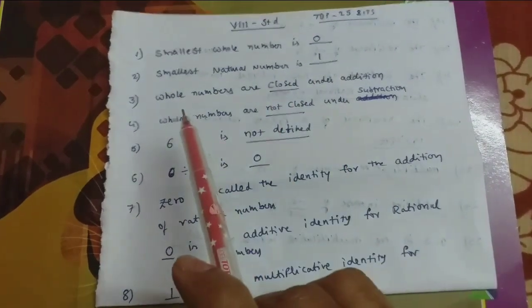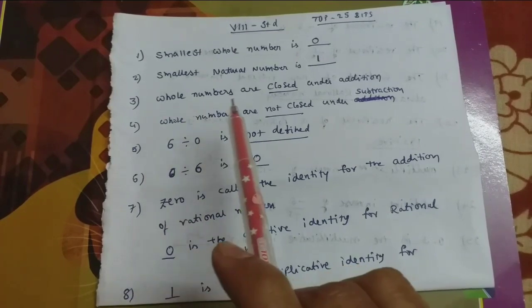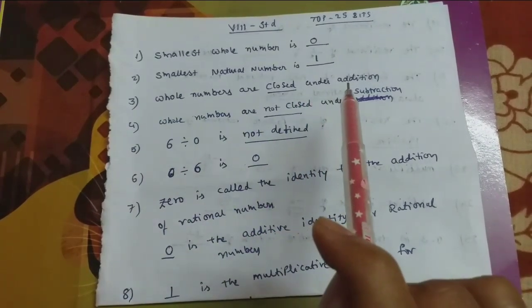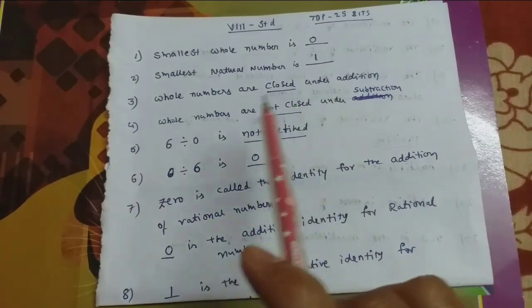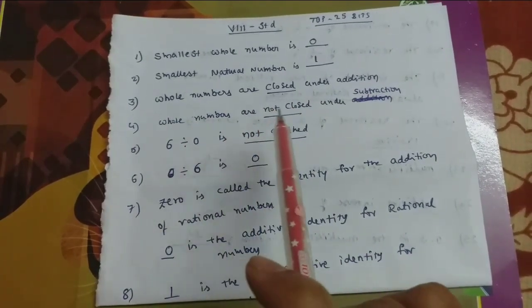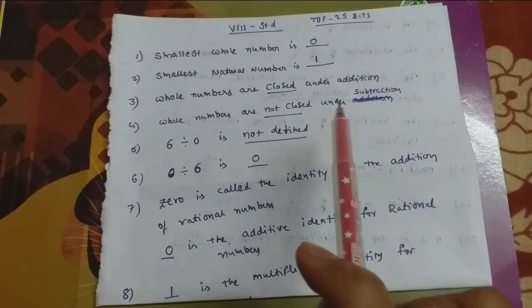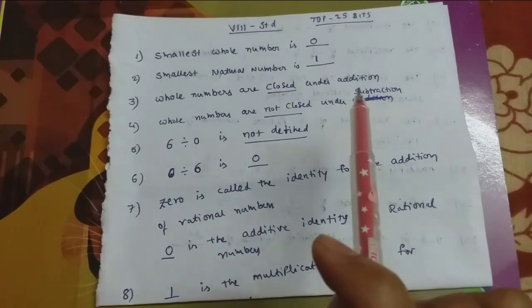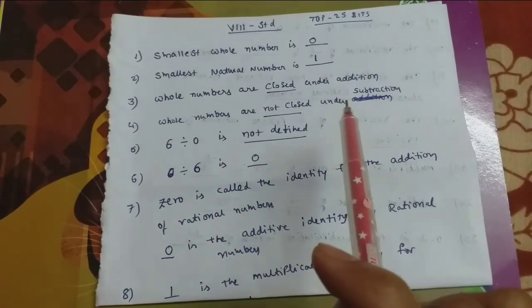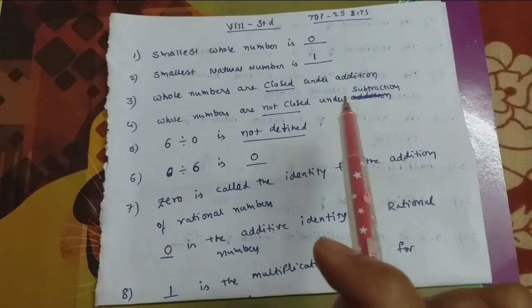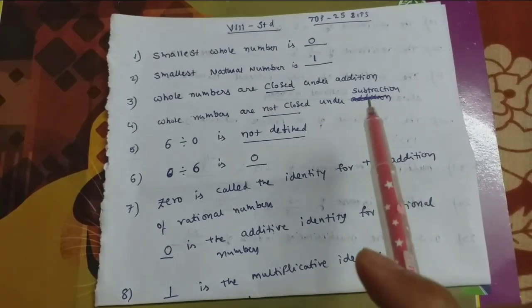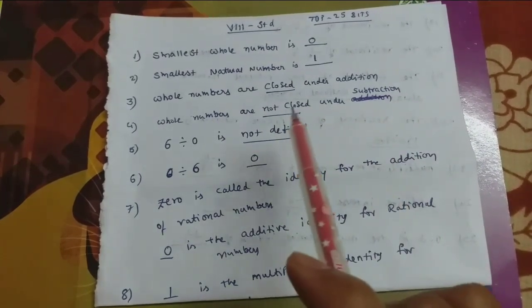Whole numbers are closed under addition. Whole numbers are not closed under subtraction. So, not closed.